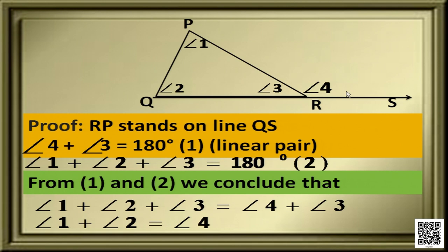Angle 4 was the exterior angle and angles 1 and 2 are the interior opposite angles. So, here is the theorem. Now we have to use this property to solve some problems.